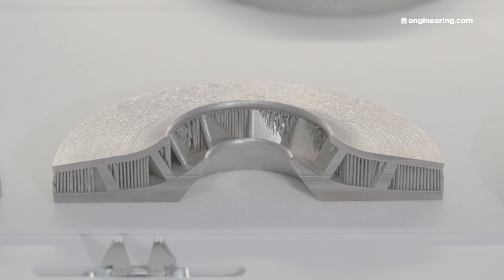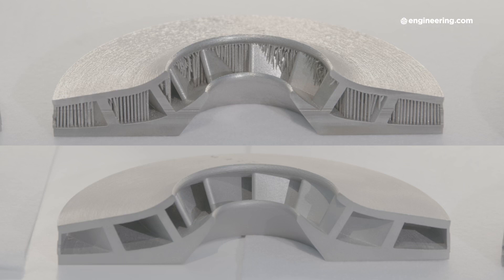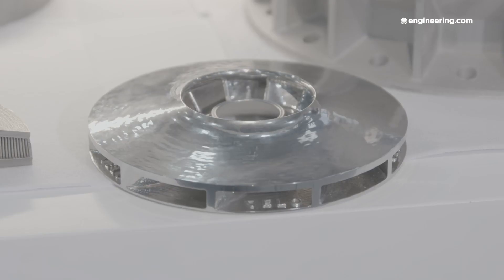Now printed parts typically have a rough surface finish somewhat comparable to cast parts. For precision applications such as mating surfaces or threads, printed parts may require complex and labor-intensive post-processing such as grinding or machining.